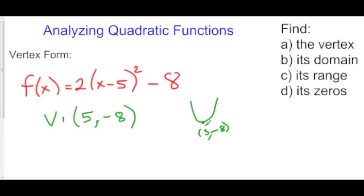Which means that the smallest that my y values can ever be, remember y is up and down. The smallest that y can ever be is negative 8. Because this is negative 8 right here. And it goes all the way up to infinity.